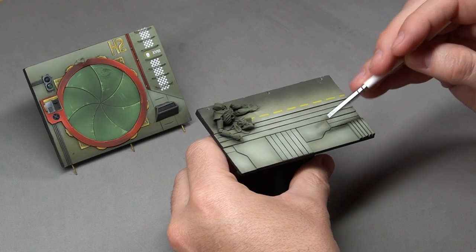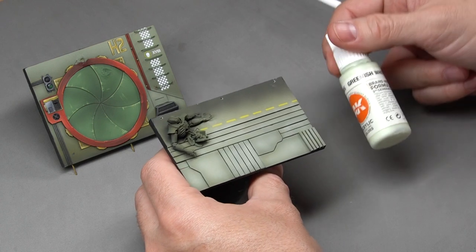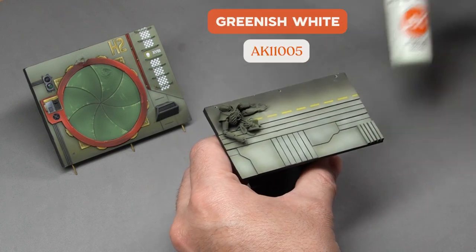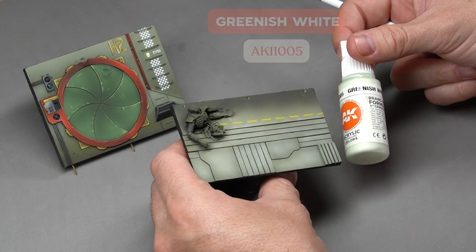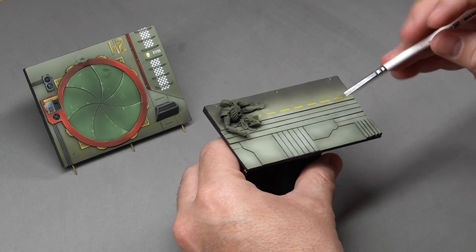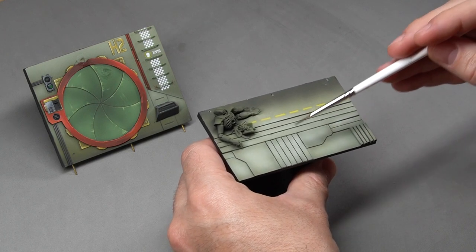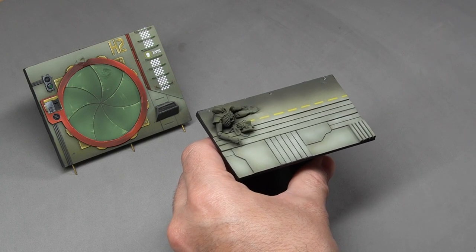We'll continue with the panel outlining. For this, we'll use the color greenish white straight from the bottle to create the outline lines. It may seem a bit exaggerated at first, but when we apply the rest of the filters, you'll see that it's the right tone.